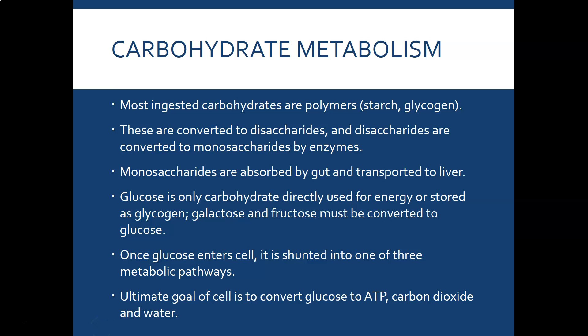So let's start with carbohydrate metabolism. Most ingested carbs are polymers, usually starches — things like breads, pasta, and rice — meaning there are multiple single sugars linked together. When you ingest them, they are broken down by enzymes like amylase in your digestive tract, especially your small intestine, and converted to disaccharides.